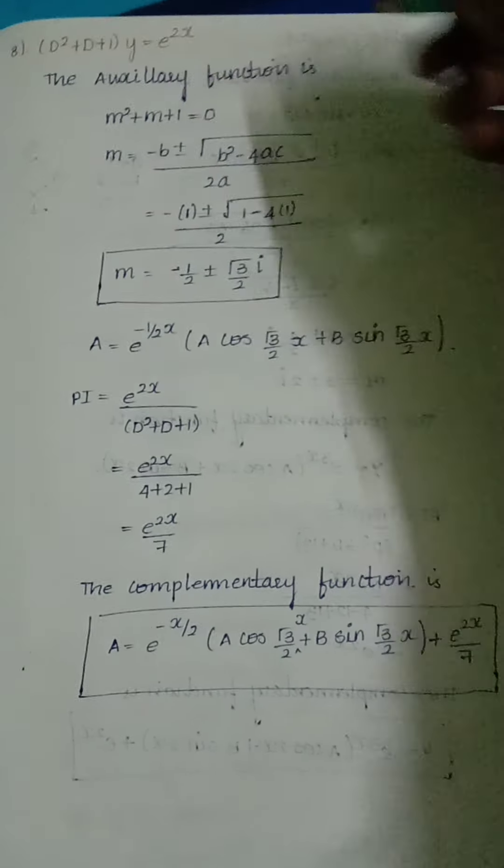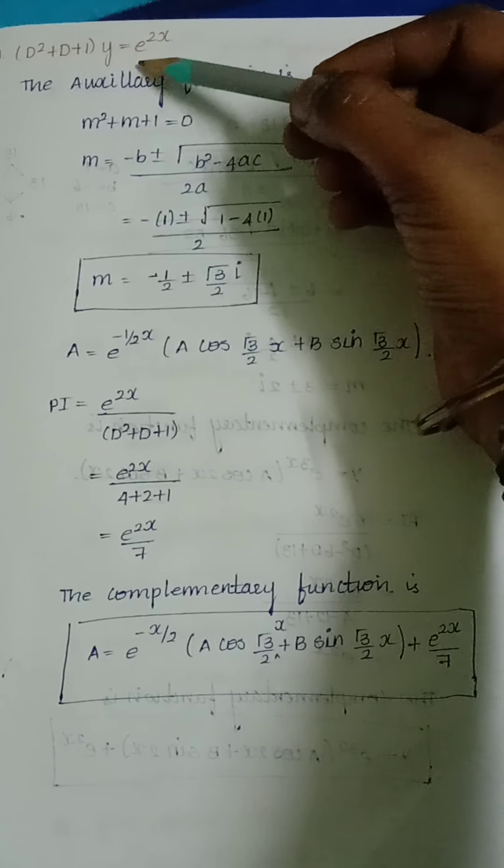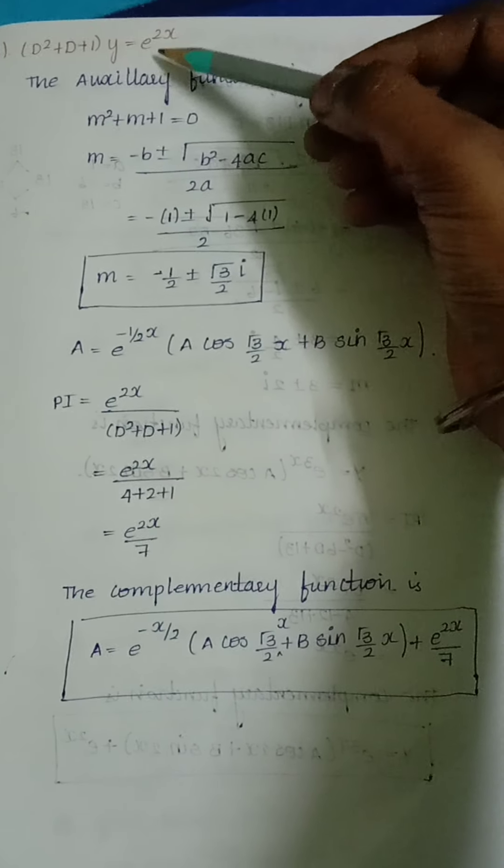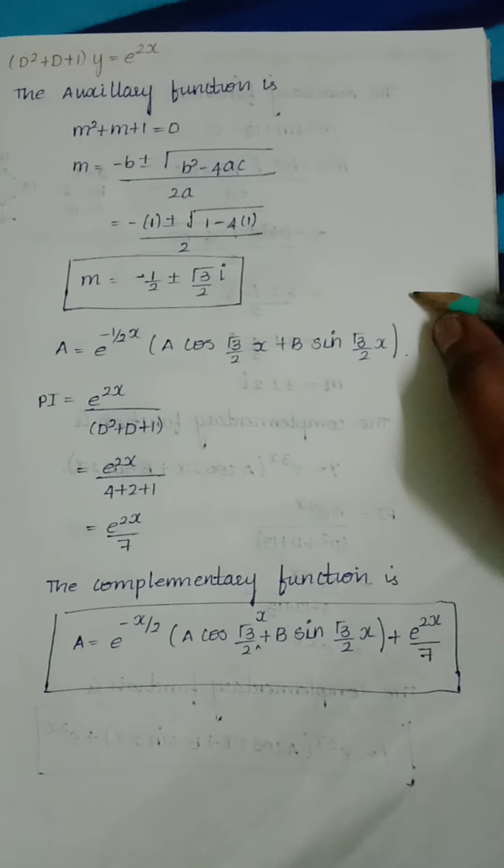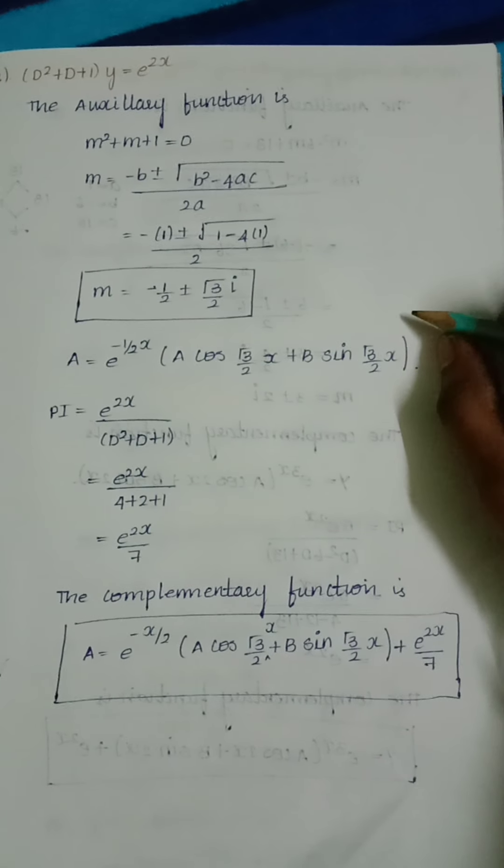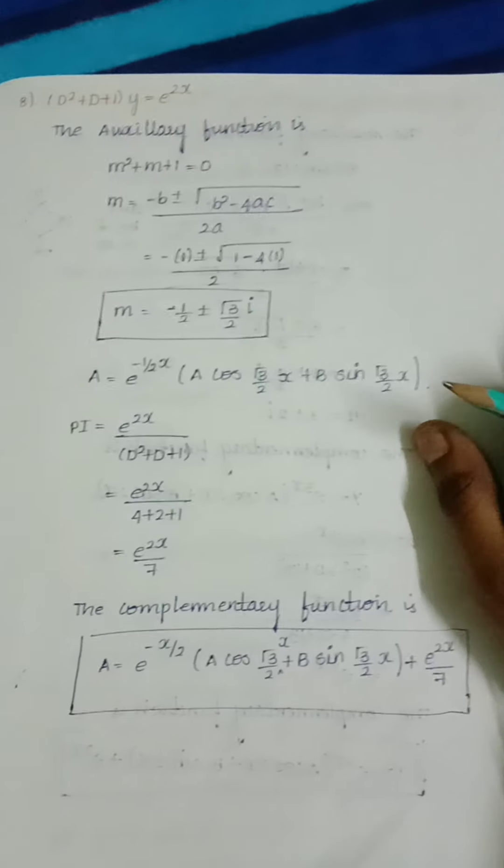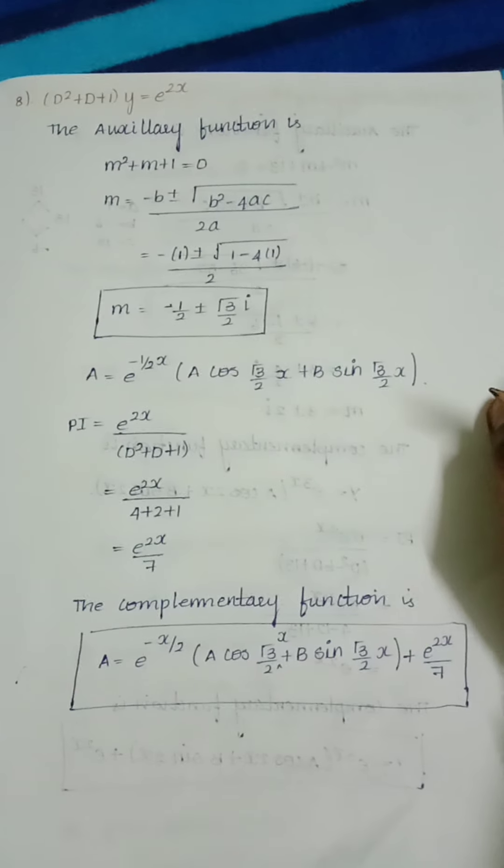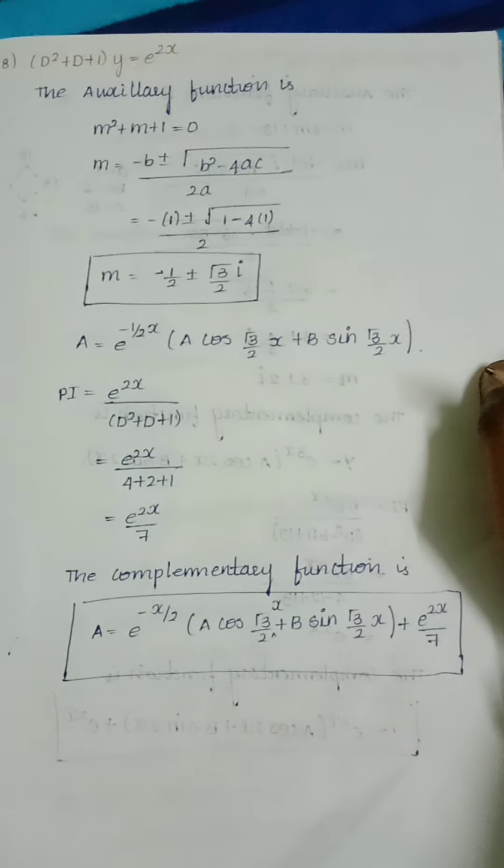Everyone, today's question is D² + D + 1 times y equals e^(2x). The given question is here, so we want to find the complementary function. This is Type 2 because after the equal sign we have some value. If it is 0, we use Type 1 method. Here after equal we have some value, so we use Type 2 method.